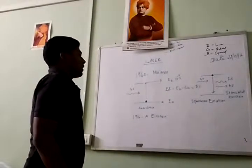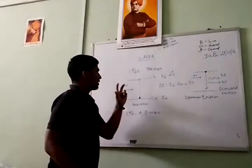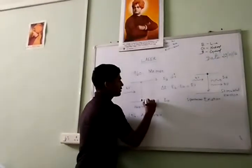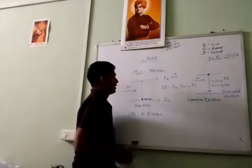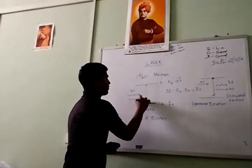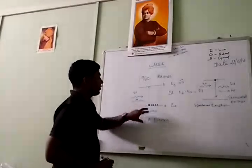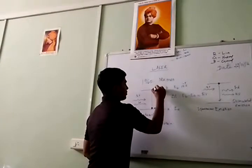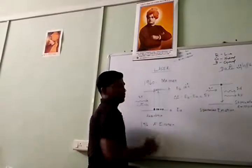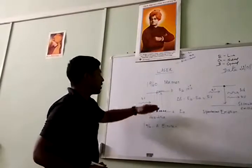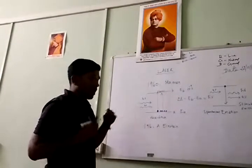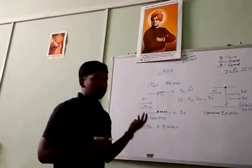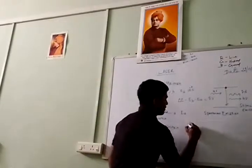Now consider the two-level system. All the atoms are placed in the ground state. When incident photons come in, they excite the atoms and all atoms are moved to the excited level. This is called population inversion — we use photons to pump all atoms from the ground state to their excited state.